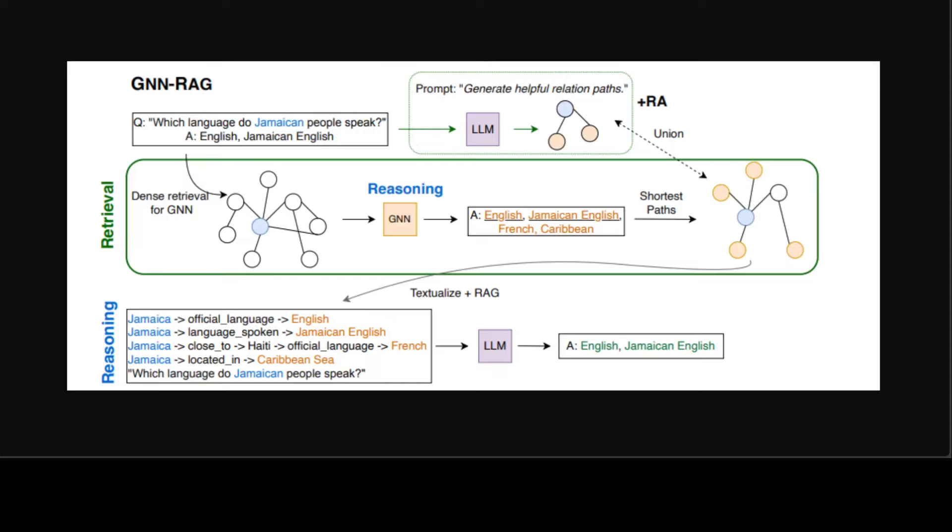As you can see in this screen, the GNN-RAG improves vanilla LLMs on KGQA and outperforms or matches GPT-4 performance with a 7 billion tuned LLM. It is really interesting to see the recent use of both tree and graph based approaches integrated with LLM to further enhance the reasoning abilities.